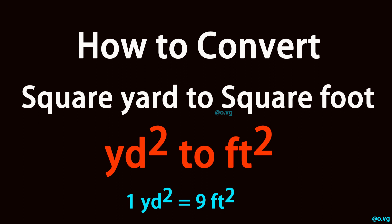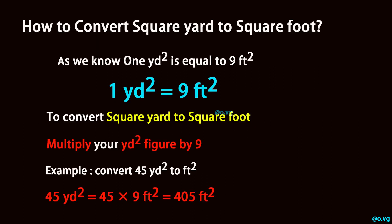How to convert square yard to square foot. As we know, one square yard is equal to nine square feet. To convert square yard to square foot, multiply your square yard figure by nine.